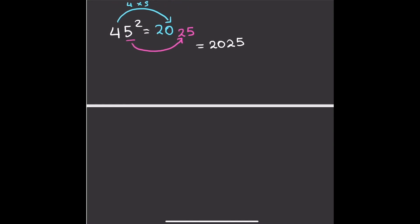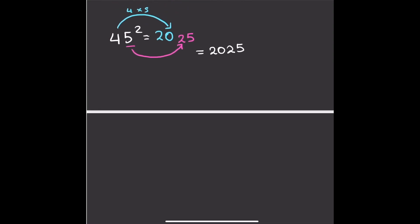Let's try some harder questions now. Let's go with 65 squared. We're going to do the same thing again — 5 squared is going to be 25. And then we're going to do times 6 by its next highest number, which is obviously 7. So we're going to get 6 times 7, which is going to be 42. So the answer is going to be 4,225.